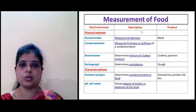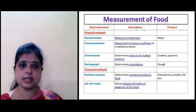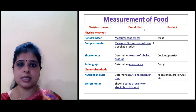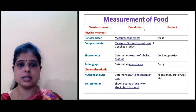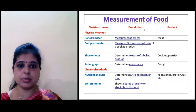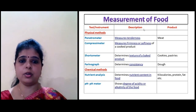Next is measurement of food. There are different methods by which we measure food quality. A penetrometer measures tenderness. A compressimeter measures the firmness or softness of a cooked product. A stratometer measures the texture of a baked product. A farinograph determines consistency. These all come under the physical methods of measurement of food. In chemical methods, nutrient analysis measures the nutrient content of a food, and a pH meter measures the degree of acidity or alkalinity of a food.